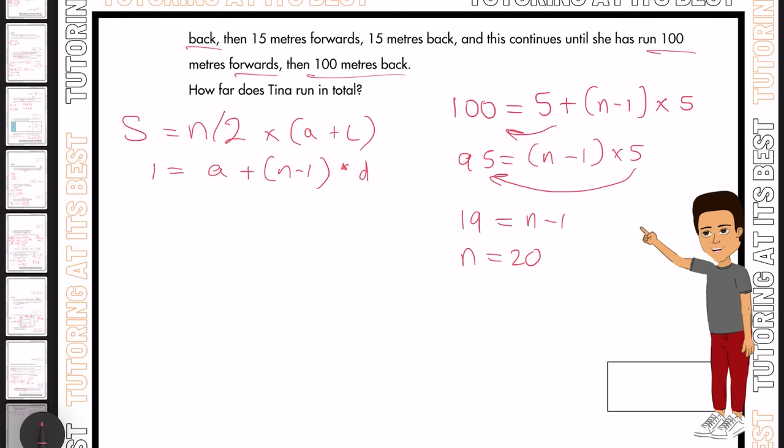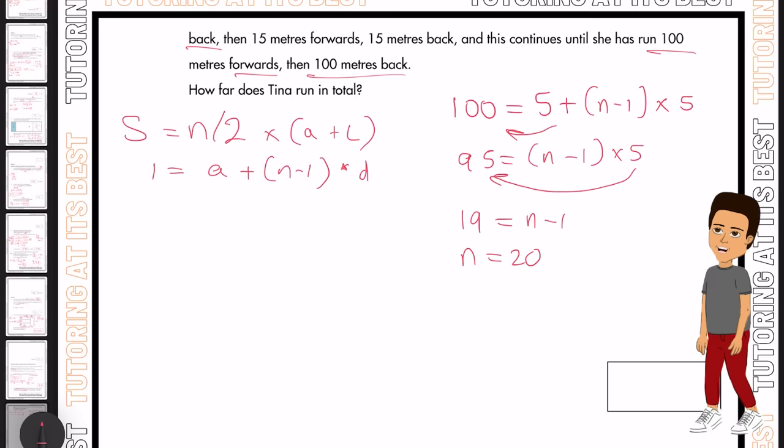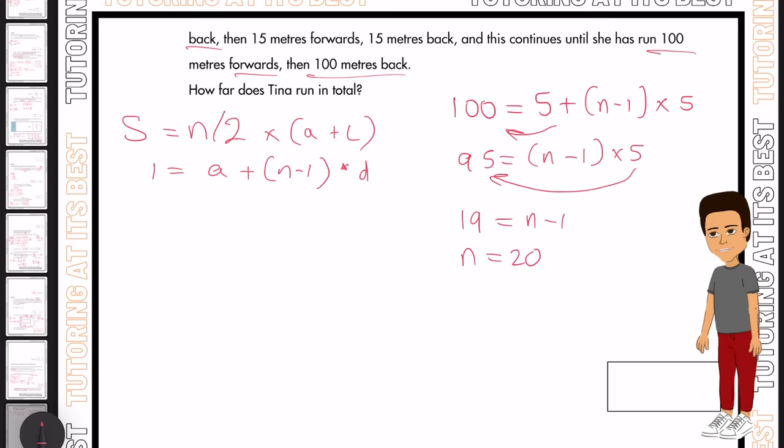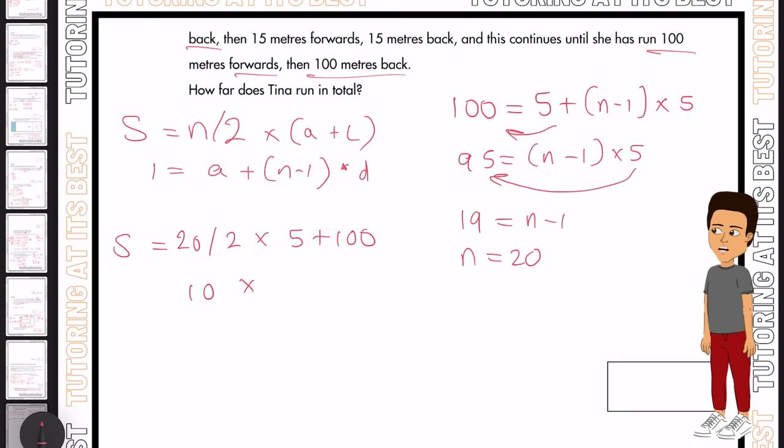We could have done that by starting off at 5, finishing off at 100, and knowing that 5 times 20 is 100. But now let's substitute the values into the sum formula. So what will that be? Well, that will be the sum, which equals 20 divided by 2 times by 5 plus 100. Remember, 5 is the beginning term, and 100 is the last term. So that gives us 10 multiplied by 105, and that's 1,050 meters.